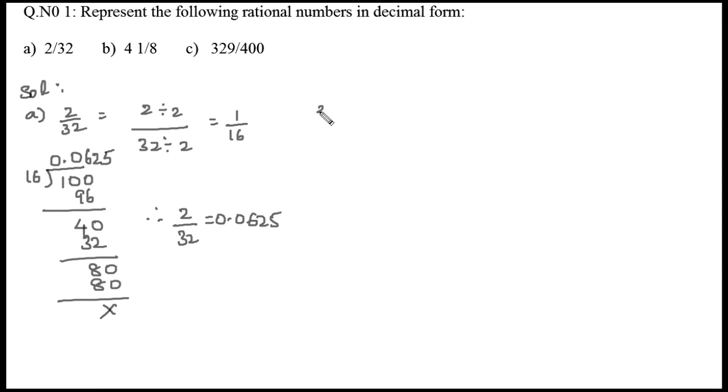Now let's do the second question. It's given as a mixed fraction: 4 1/8. First we will convert this mixed fraction into an improper fraction. It becomes 33/8. Now divide 33 by 8. 8 goes into 33 four times, giving 32 with remainder 1. Taking down 0, we place a decimal point here.